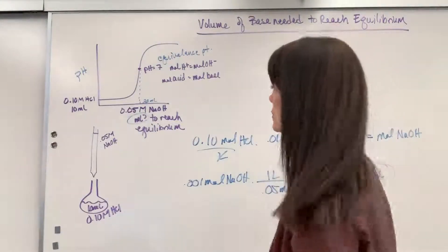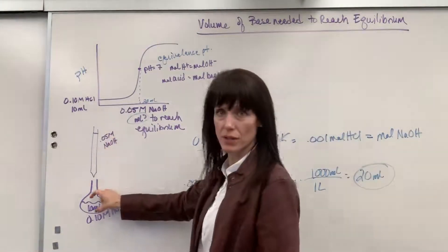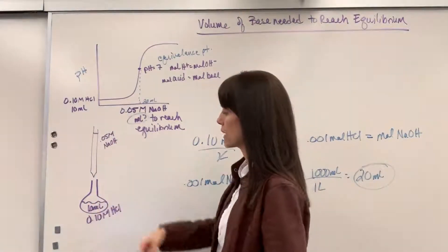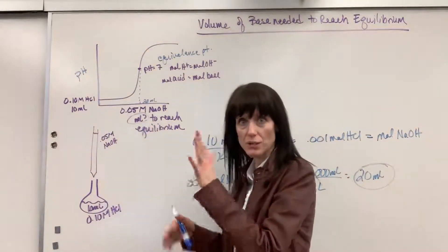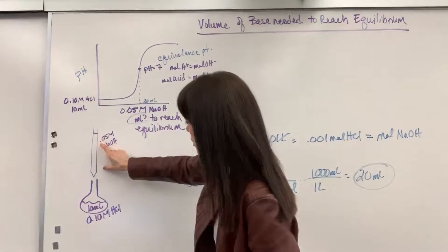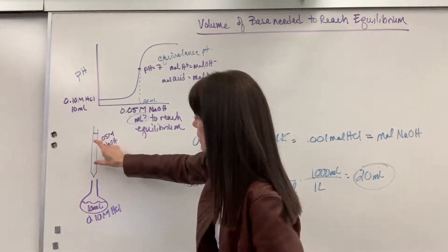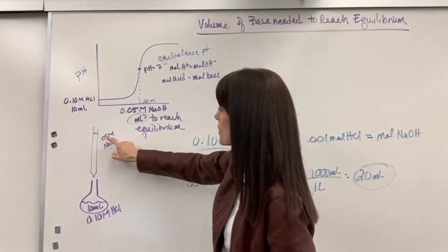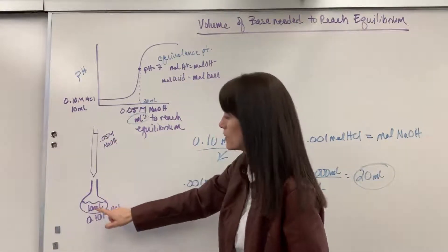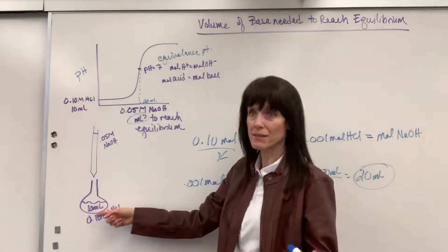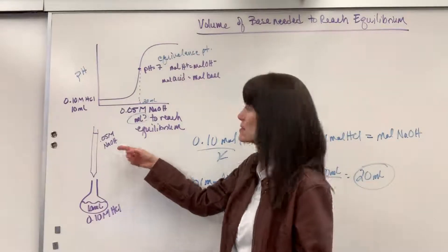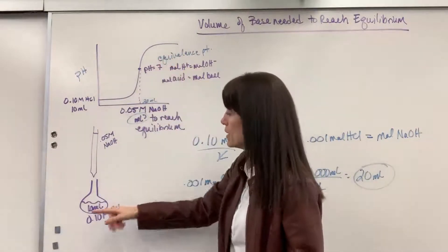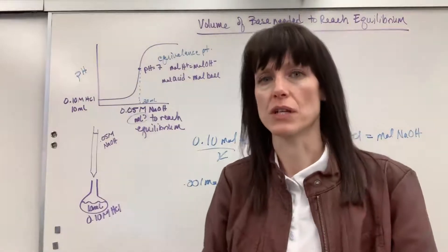Now, this could go in reverse. You could know the volume that you deliver. Maybe you had an indicator in here. It changes color. You stop. You take the volume of the base times the molarity. That will give you moles. The moles here equal the moles down here. And then you just take the moles of the acid. Because it has to be the same as the moles of the base. Right? When we're at equilibrium. Simply divide it by the volume. And you just found concentration.